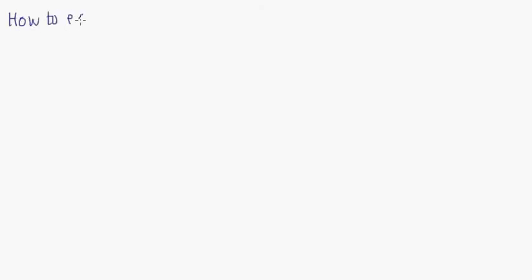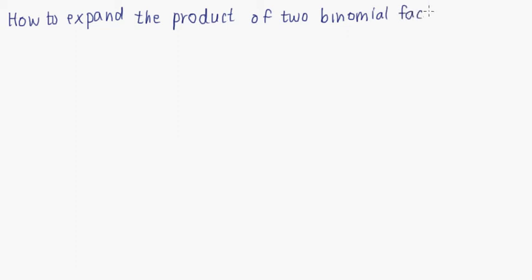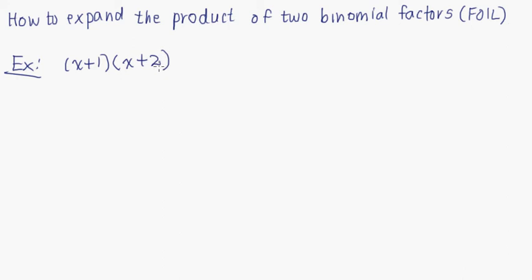Hi everyone, so today we'll be talking about how to expand the product of two binomial factors using FOIL. So let's get started with the example. Let's say we're given the two binomial factors of x plus 1 times x plus 2. We want to expand this, and in order to do so, we use a technique called FOIL. F stands for first,